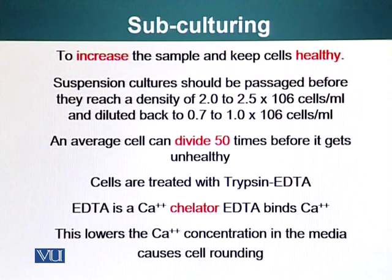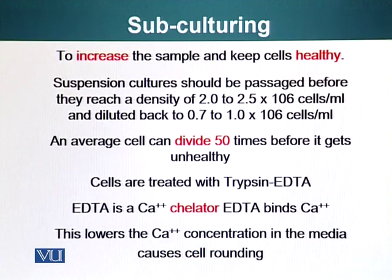When you have to passage the cells, or when you have to lift the cells from a dish — we are of course talking about adherent cells — they are treated with trypsin-EDTA. Trypsin is a protease. Since a lot of adhesion proteins are sticking outside the cells, they are one of the prime targets of trypsin, and a low concentration of trypsin is used. To help trypsin do its job, we also add EDTA.